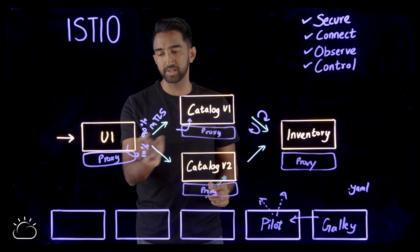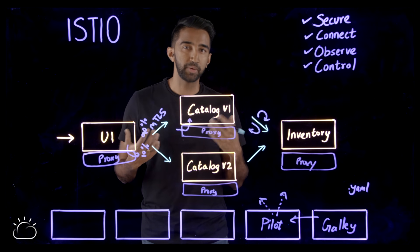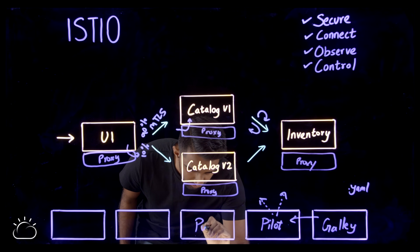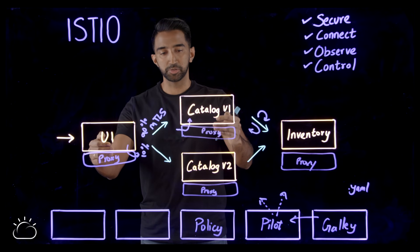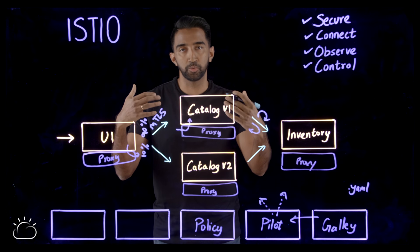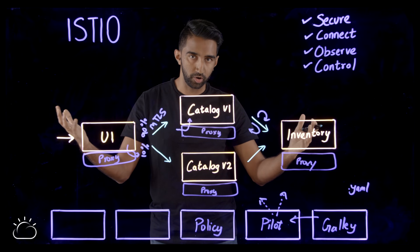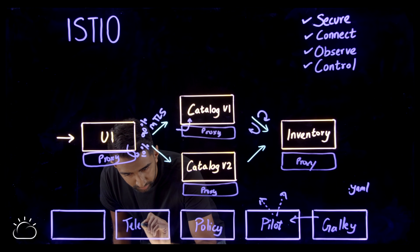If you want the proxies to add additional policies and roles, there is a policy component. And then these proxies constantly report telemetry information about what is going on in your system to the Istio telemetry component.